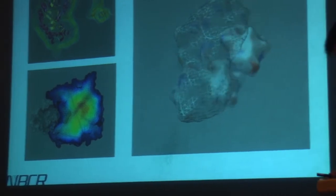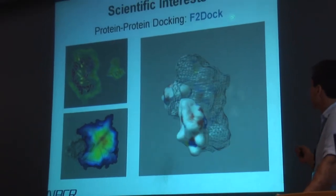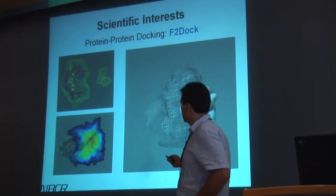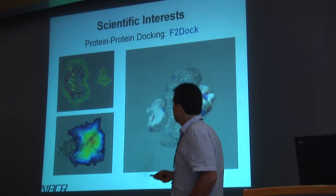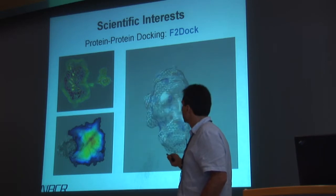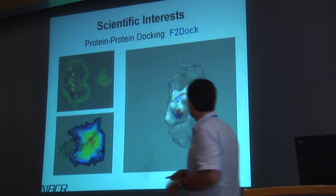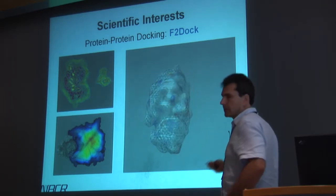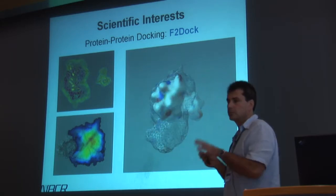Besides ligand-receptor docking, we're also interested in protein-protein docking, and we're working on a tool called F2Doc, which is a fast Fourier method for protein docking. The idea is that we take a receptor protein and a ligand protein, define a zone around the molecule called the skin, and inside the molecule define the core. We optimize by maximizing the overlap of the skins and penalizing overlaps of skins with cores. Here we see results for the Barnett-Barnstar complex, cycling through solutions found using purely shape complementarity.